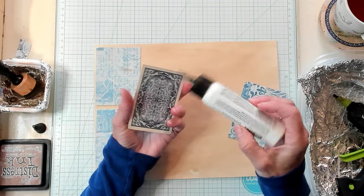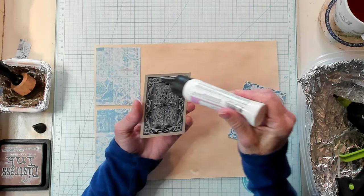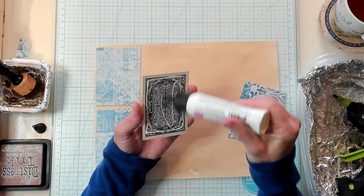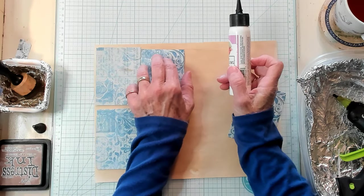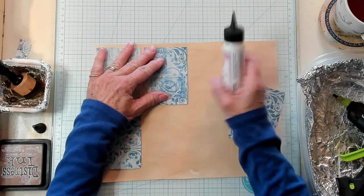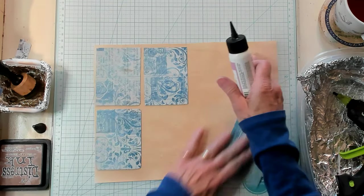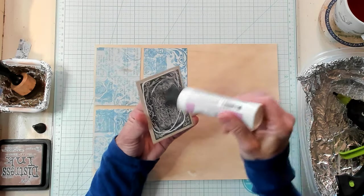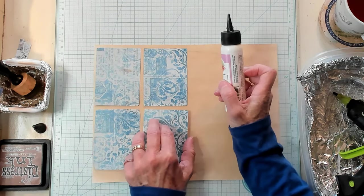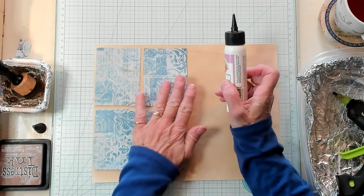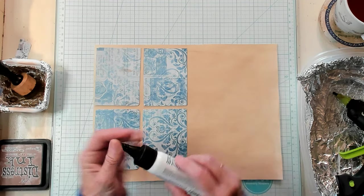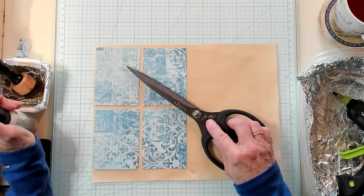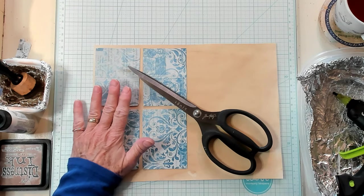But if, like me, you're going to be sewing yours, then you don't have to do that, because the sewing will make sure that your paper stays in place. So, just applying the glue, sticking it on, placing it on the back, and sticking it onto the paper of your choice, and then grabbing your scissors and just trimming them out.